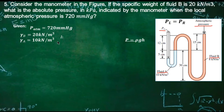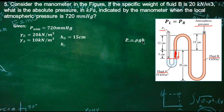For the height, we need to put a reference line. For fluid A, this portion exerts a downward pressure, and the height of fluid A needed to solve for pressure is 5 centimeters.